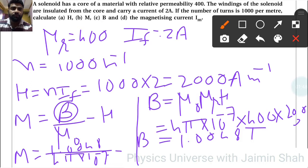H = 2000, so that is 2000 here. Now 1.0048 divided by 4 divided by 3.14 into...